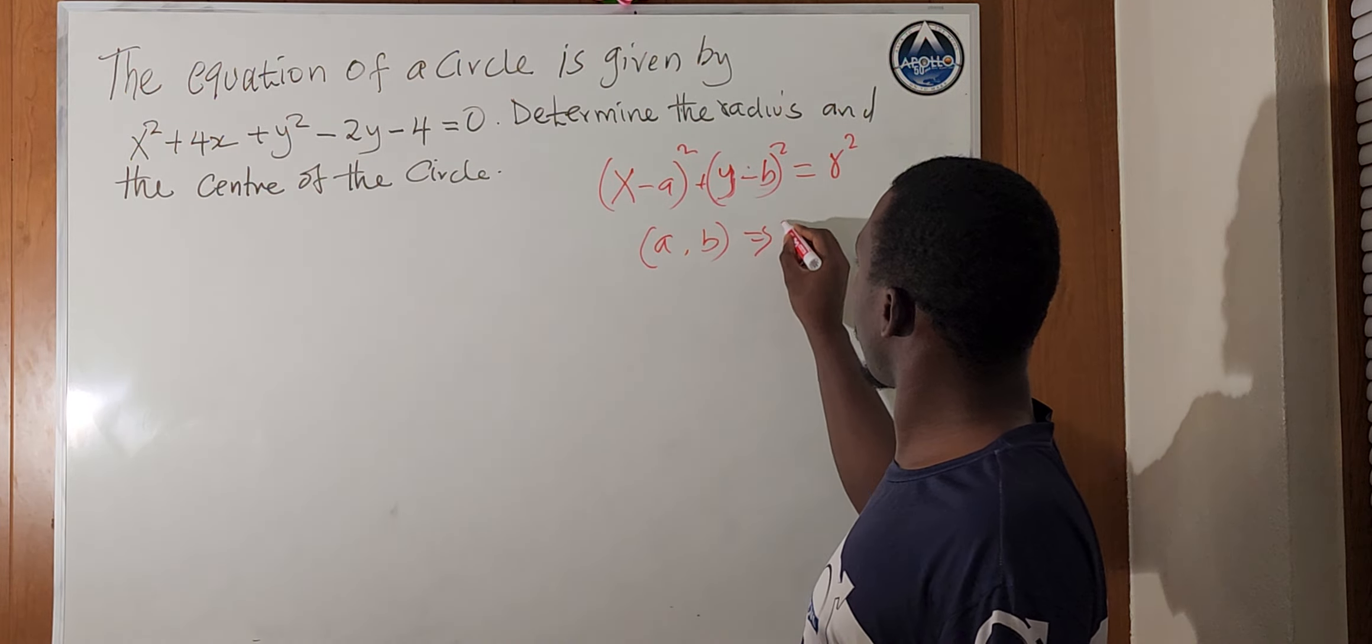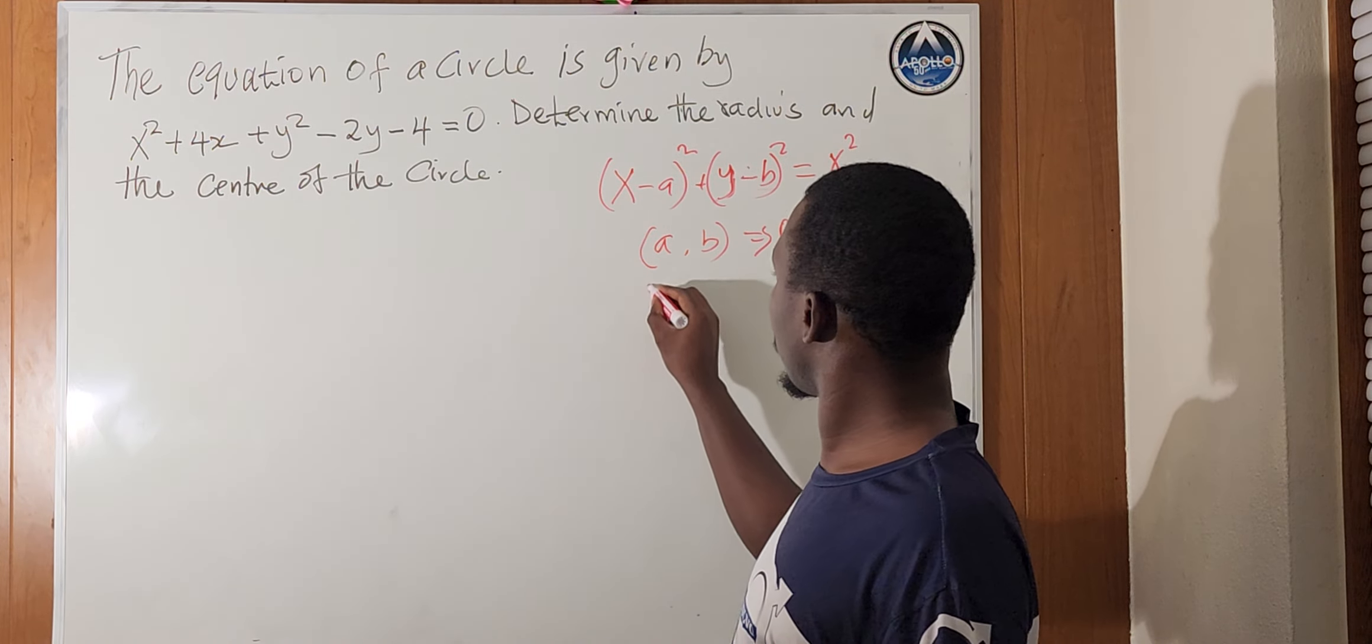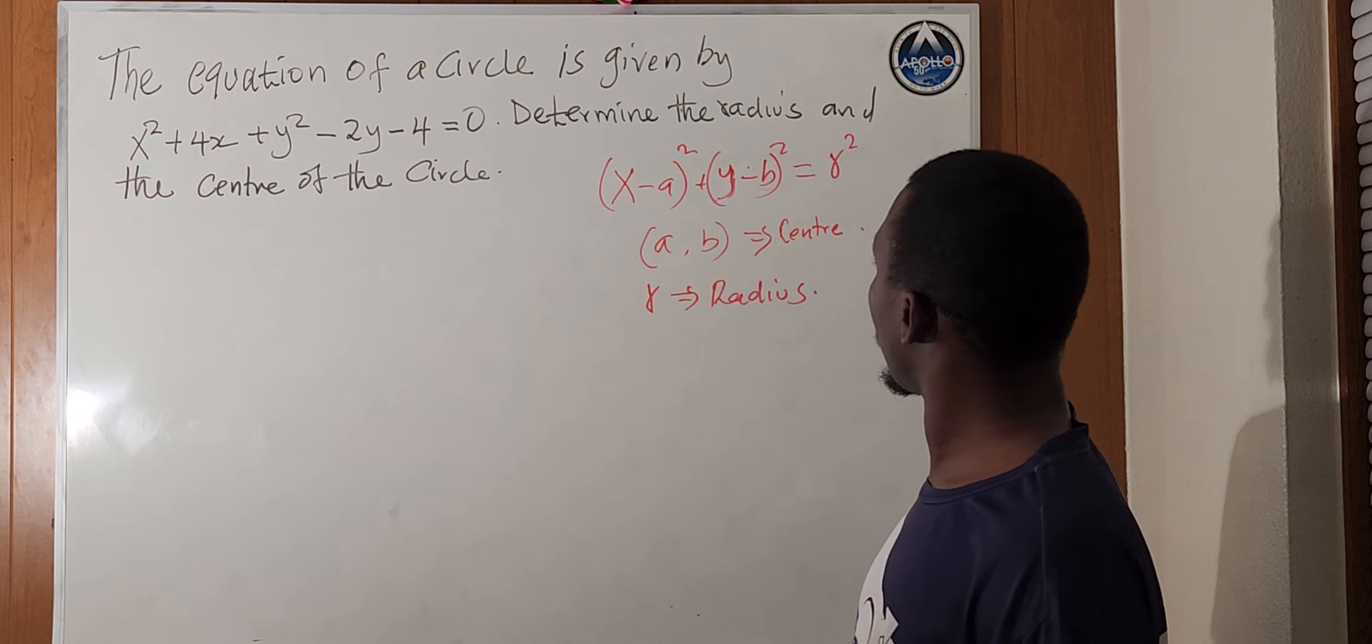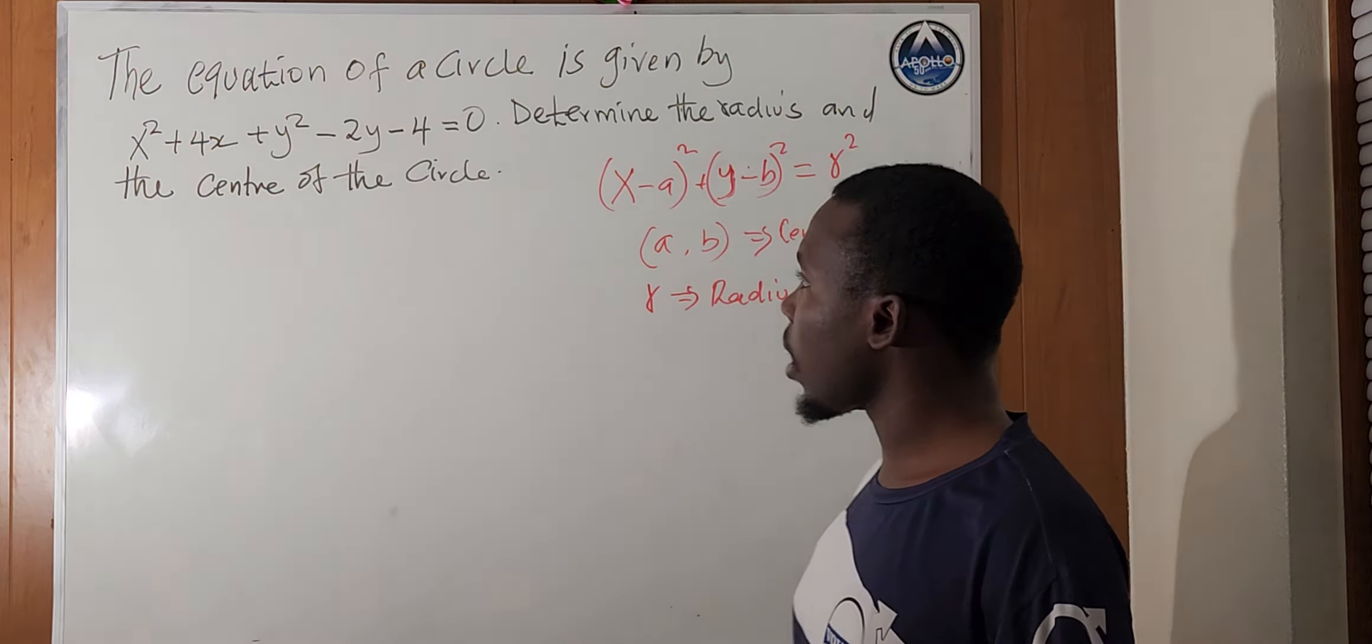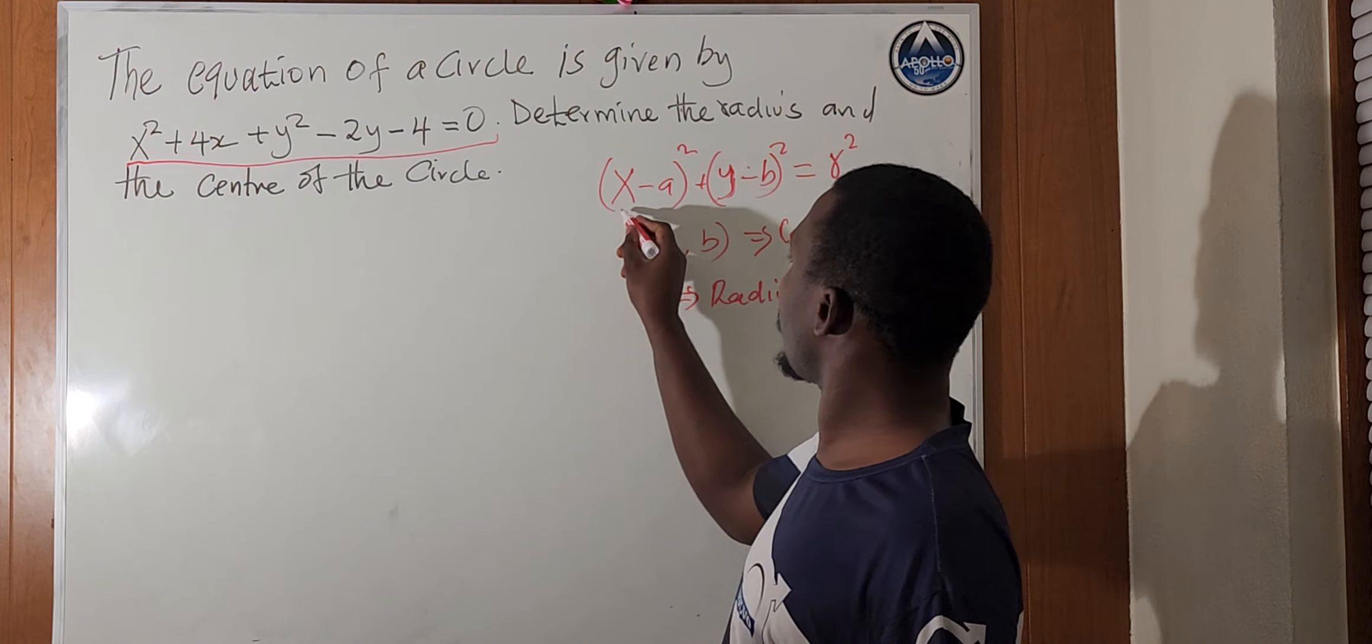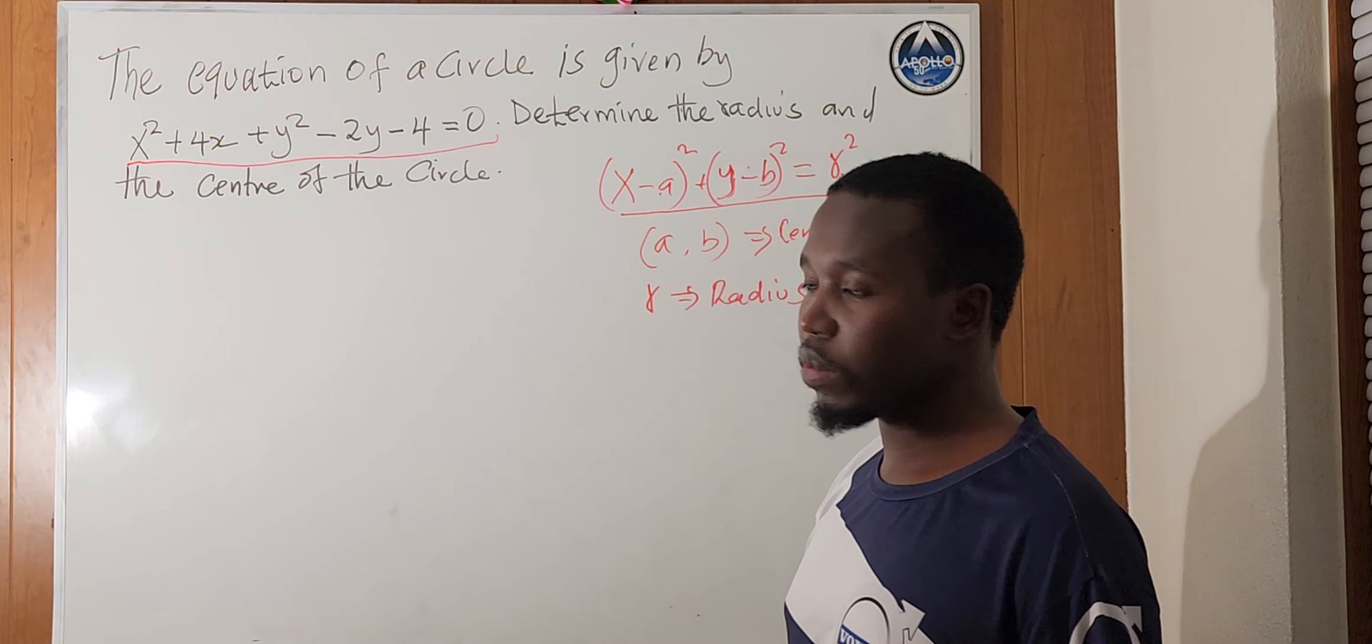And this gives you the center of the circle. R is the radius of the circle. Now, from here, we already almost know everything. Now, we'll deal with this equation here and try to solve and see whether we can be able to write this equation in this form so that we can figure out a and b and r direct from there.